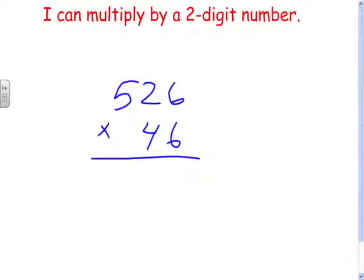So how about five hundred twenty-six times forty-six. We're going to put the one with the most digits on top — the bigger number on top — just because it's easier to lay it out and see everything. Six times six is thirty-six. Two times six is twelve, plus three is fifteen. Five times six is thirty, plus one is thirty-one.